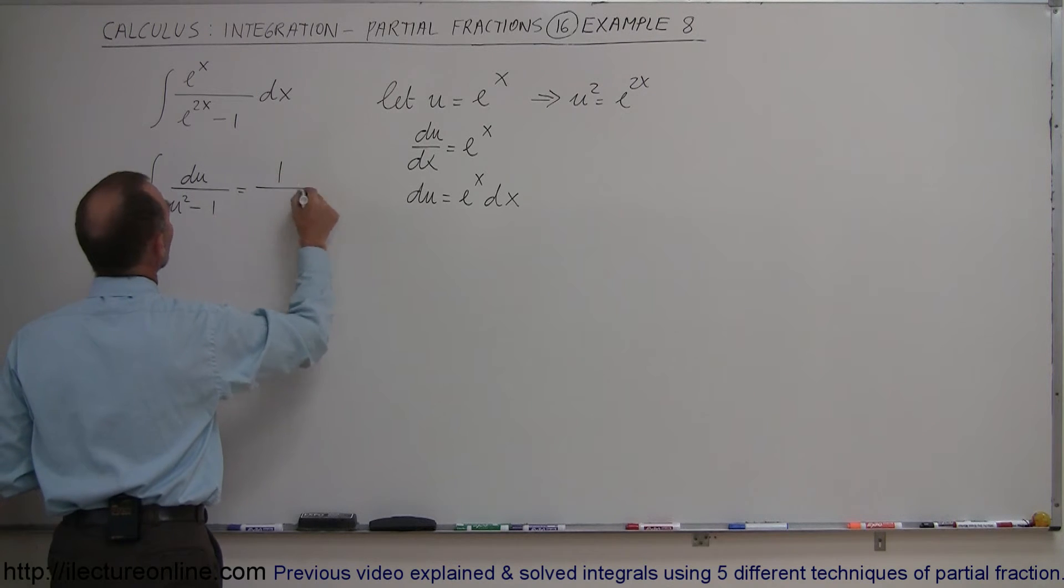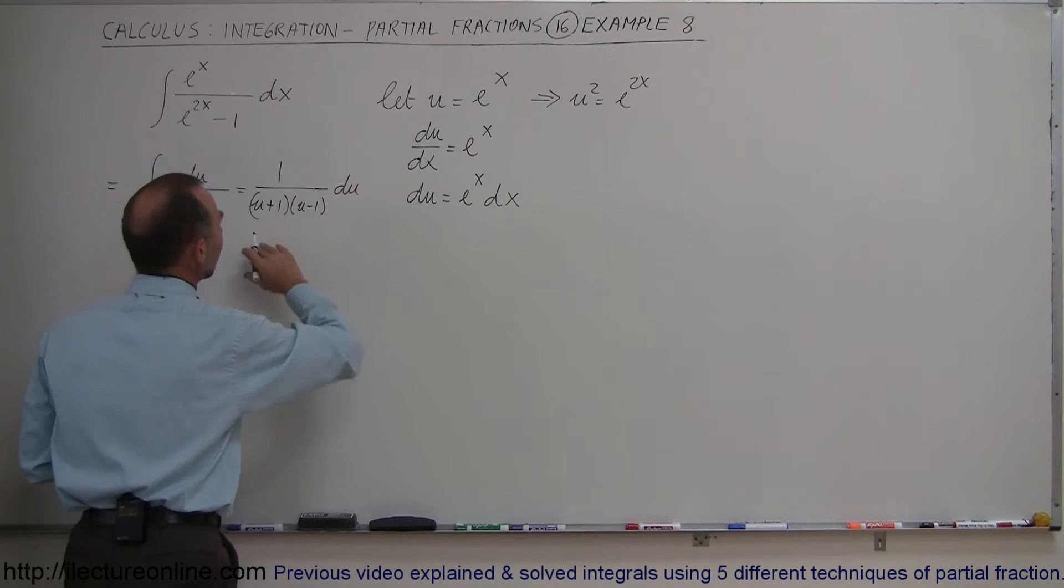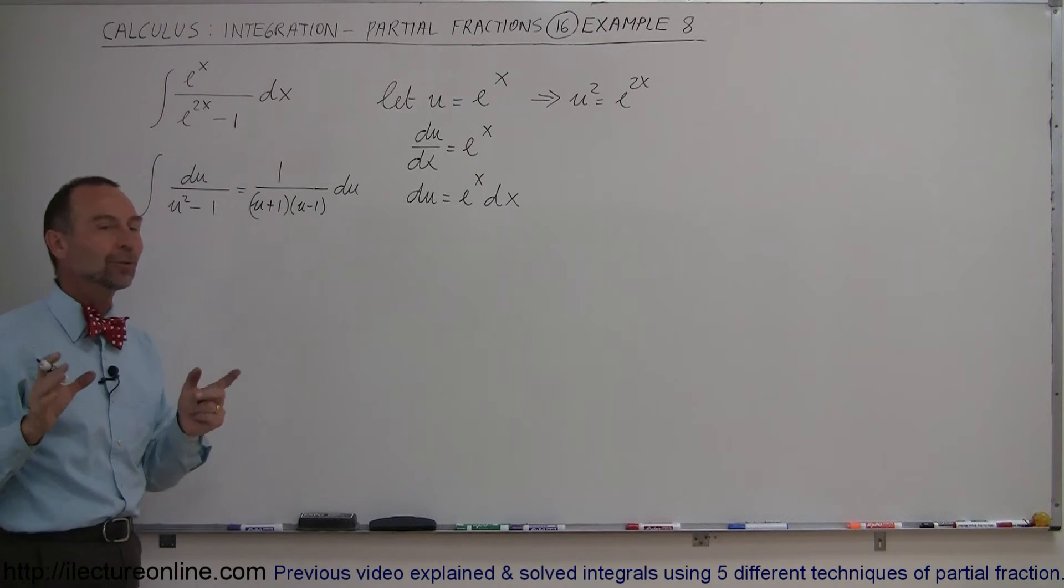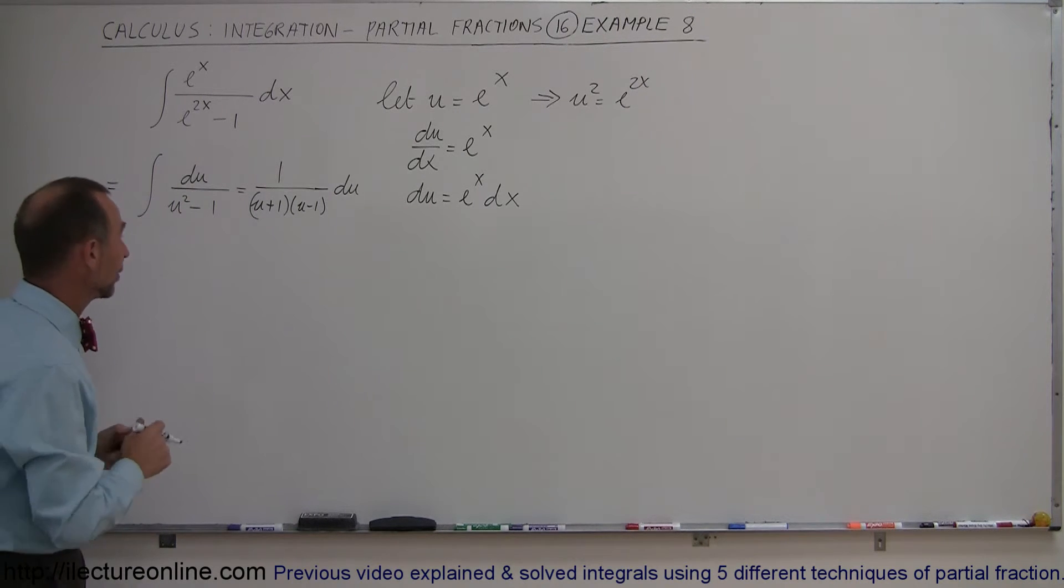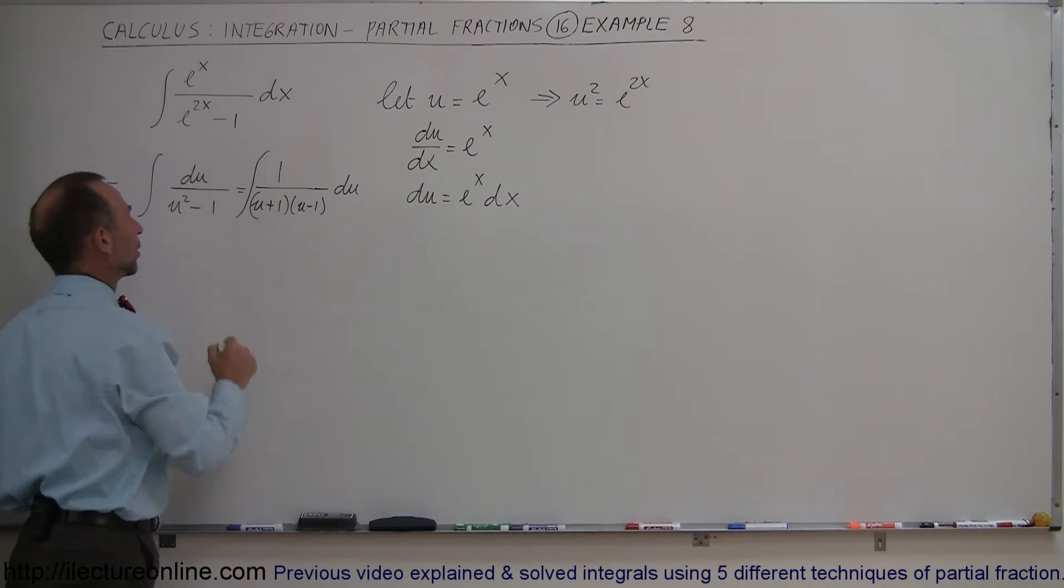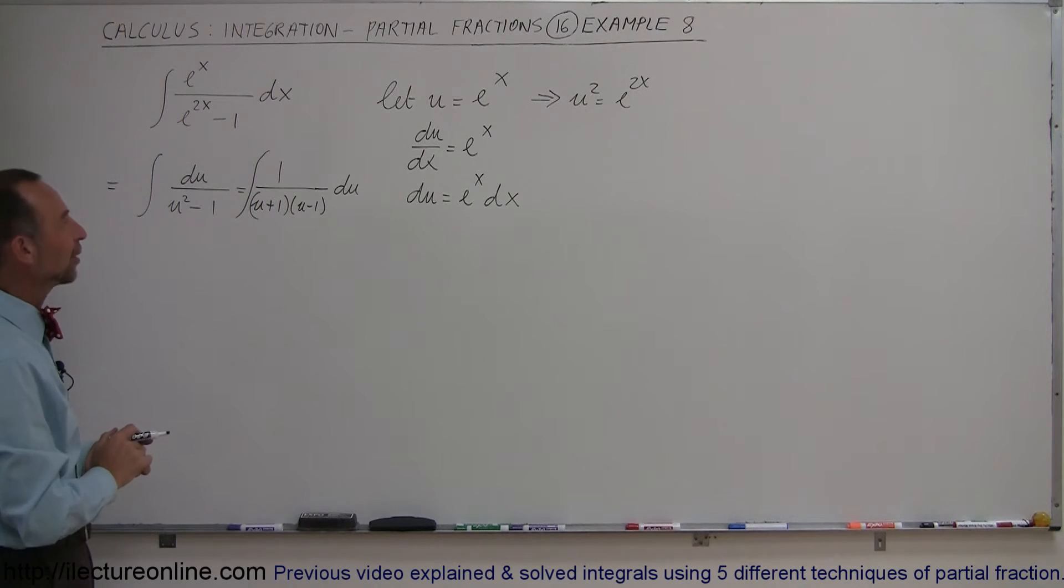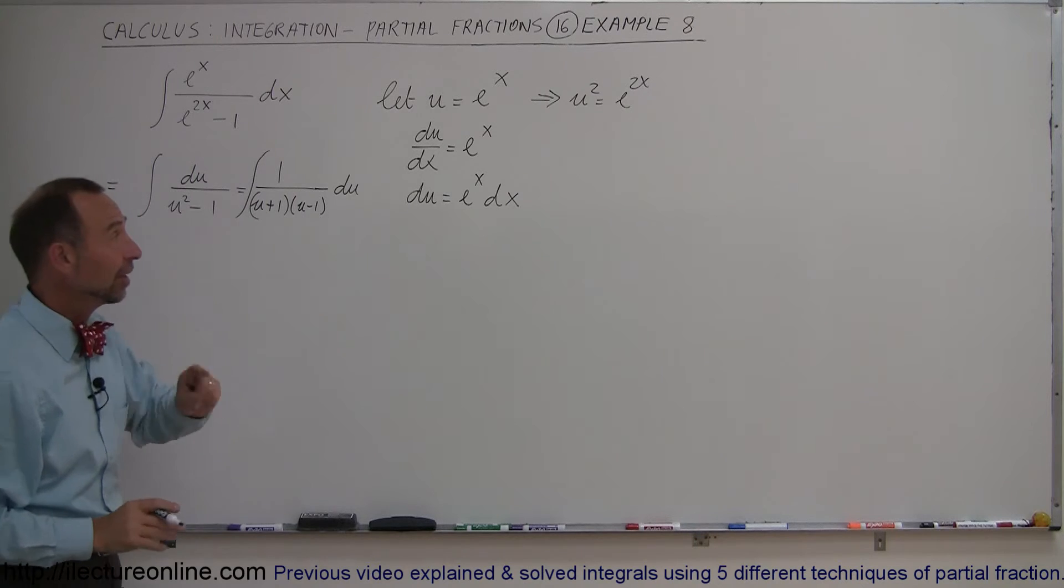So I end up with u² - 1 in the denominator, which can be written as 1 over (u+1)(u-1) du. Now I can use partial fractions to solve this integral.